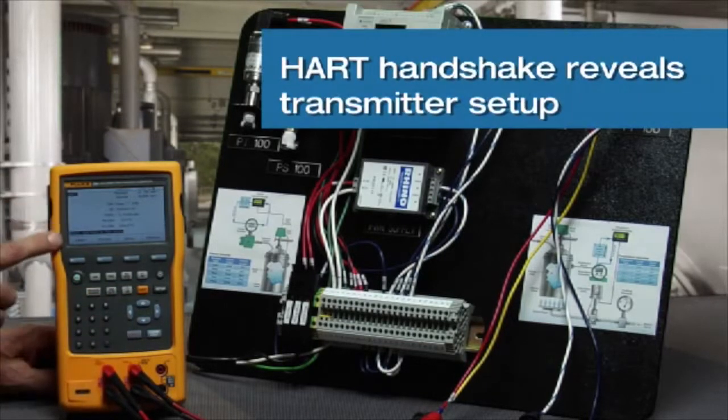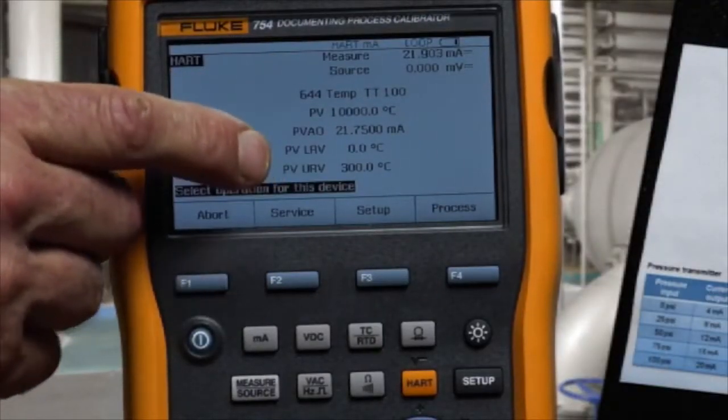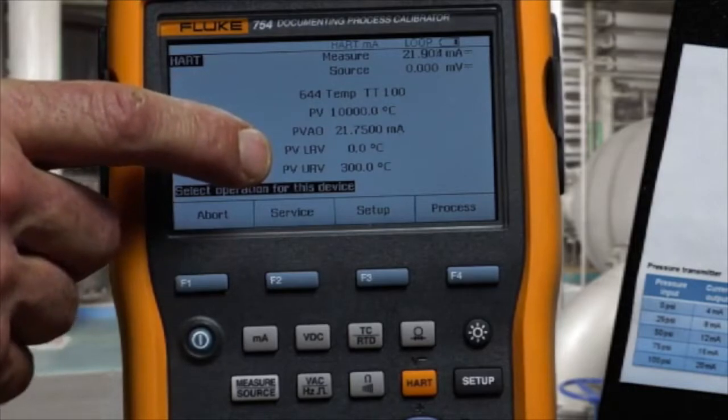Once communication is initiated, we see the tag of the transmitter, the PV, PVAO, and the transmitter's range, 0 to 300 degrees C.